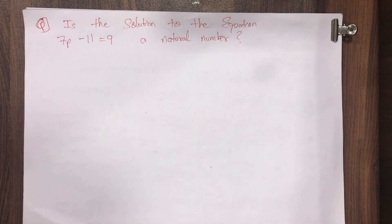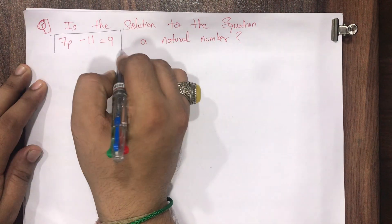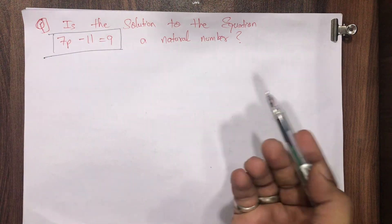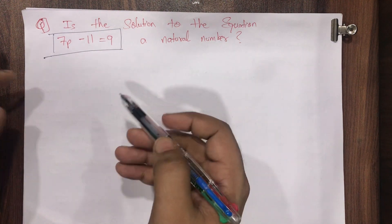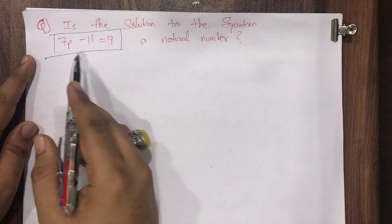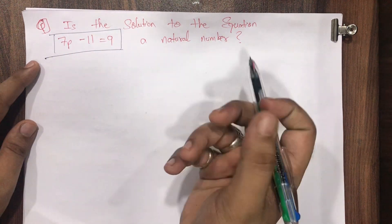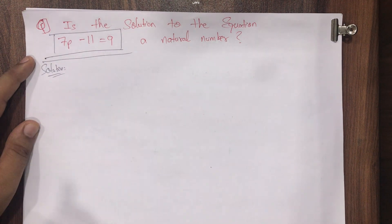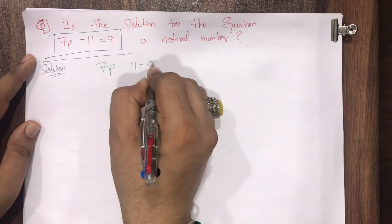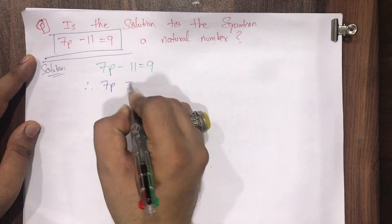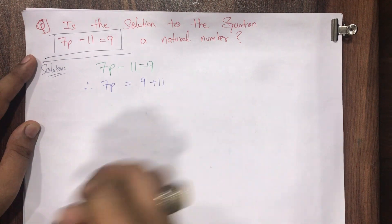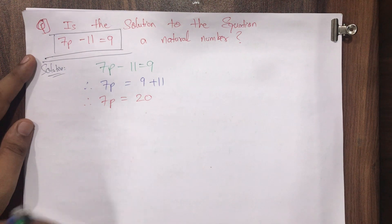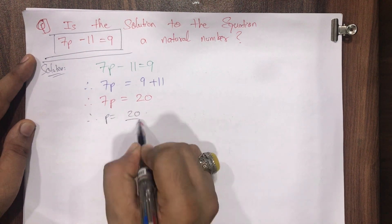Now the next question on the screen: is the solution to the equation 7p minus 11 equals 9 a natural number? We need to find the value of the unknown p, so let's solve it. In the solution part, I copy the equation: 7p minus 11 equals 9. Therefore 7p equals 9 plus 11, which becomes 20. So therefore p equals 20 upon 7.